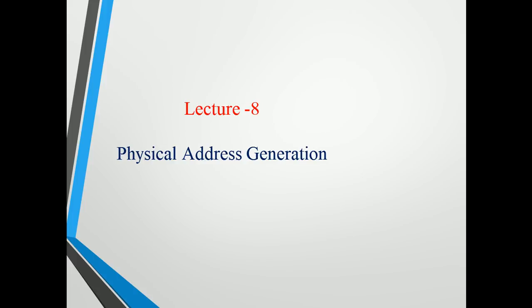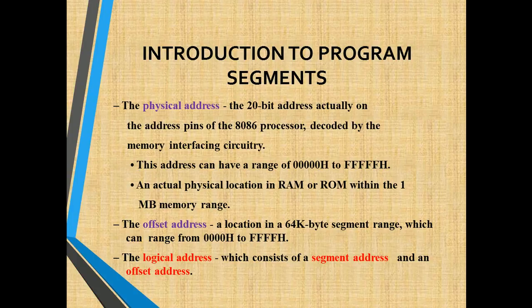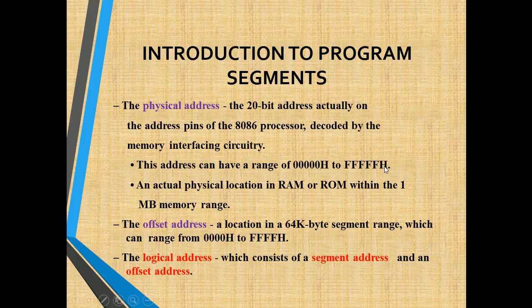In this lecture I am going to explain how to generate the physical address. The physical address is a 20-bit address. On the 8086 processor the 20-bit address is decoded by the memory interfacing circuit. Because of the 20-bit address, the starting address is 00000H and the ending address is FFFFFH. Therefore the total address range covers 1 MB of memory.